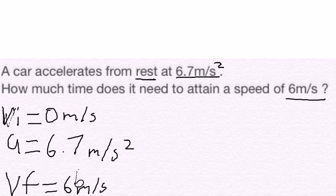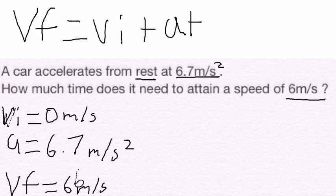The next thing you want to do is identify what formula you're going to use. Since this problem has time in it, you're going to use the first equation. The first equation is VF equals VI plus A times T. Final velocity equals initial velocity plus acceleration times time. Now we plug in our numbers.